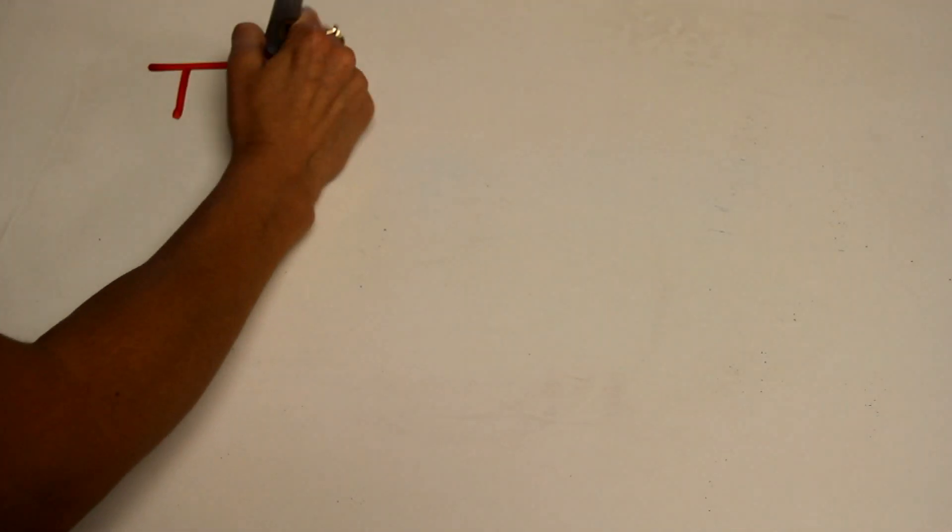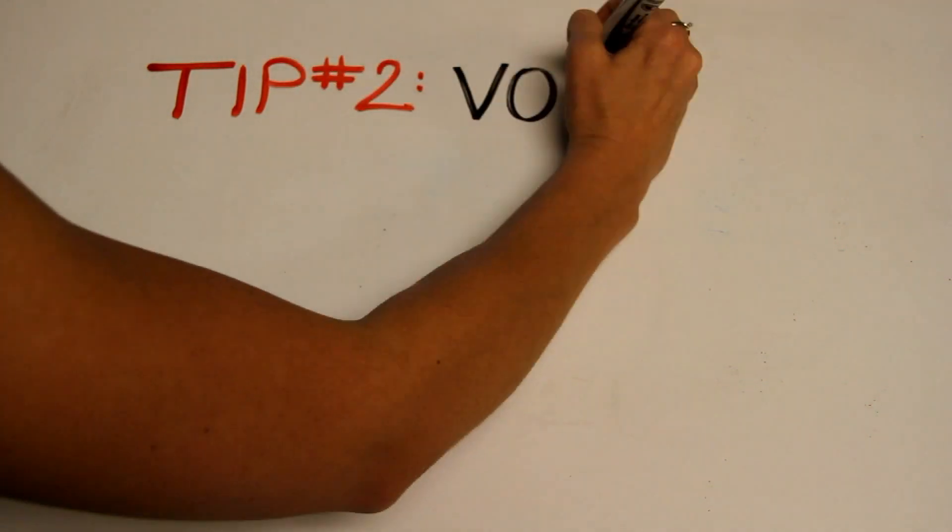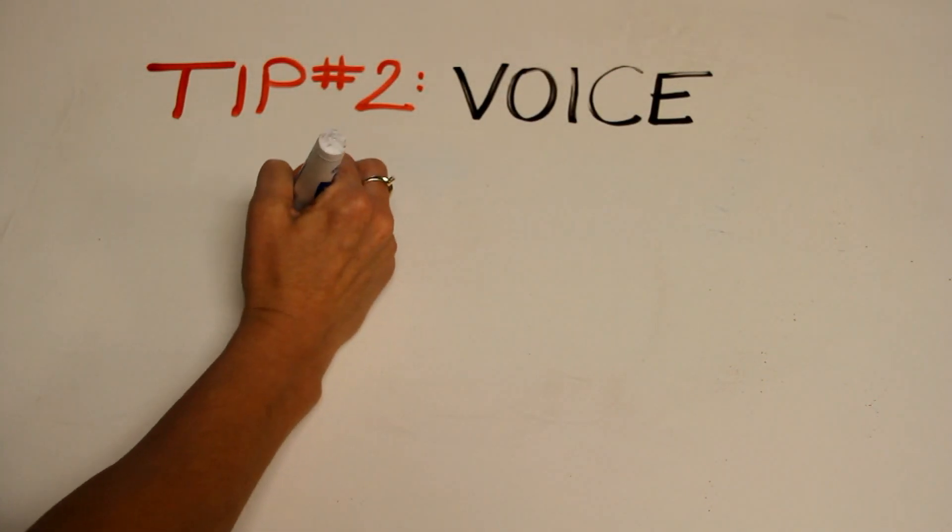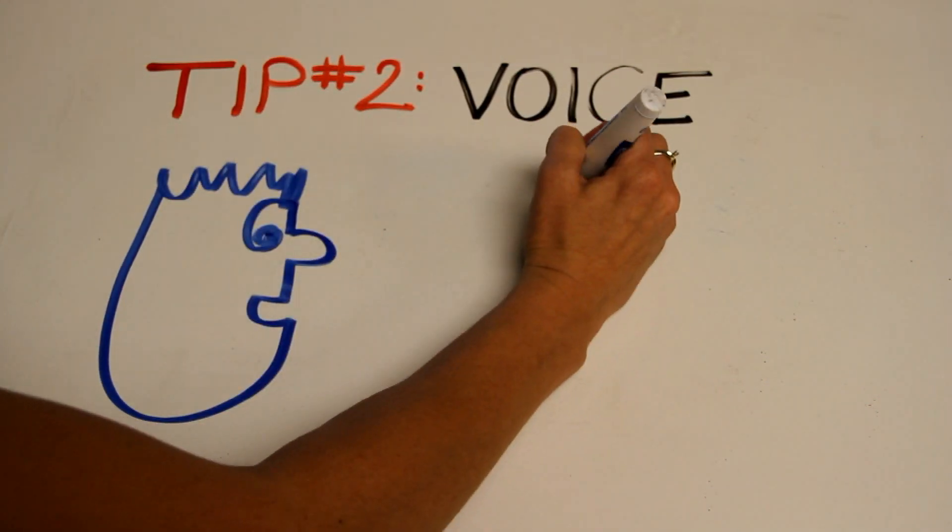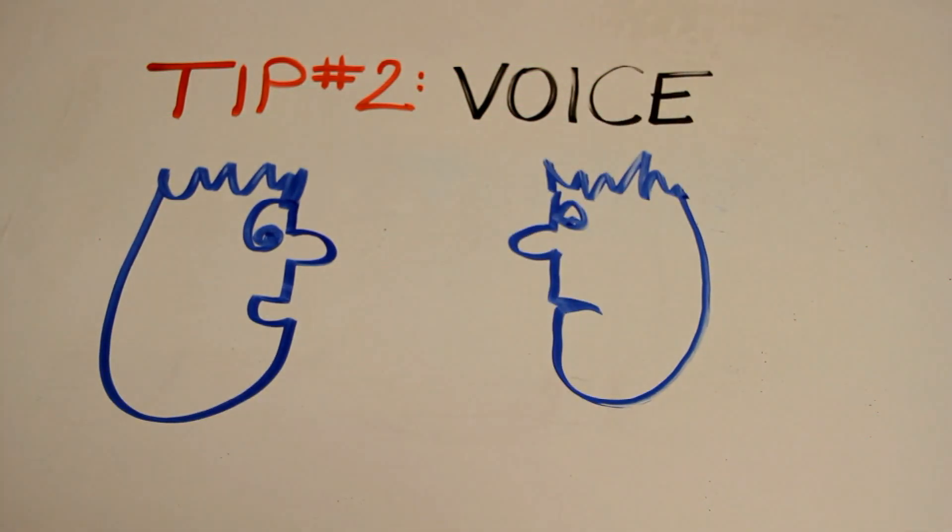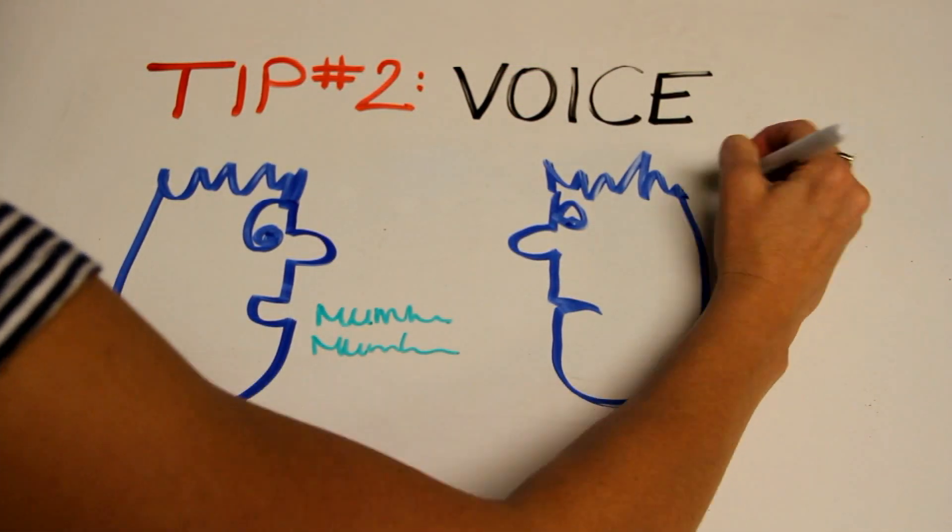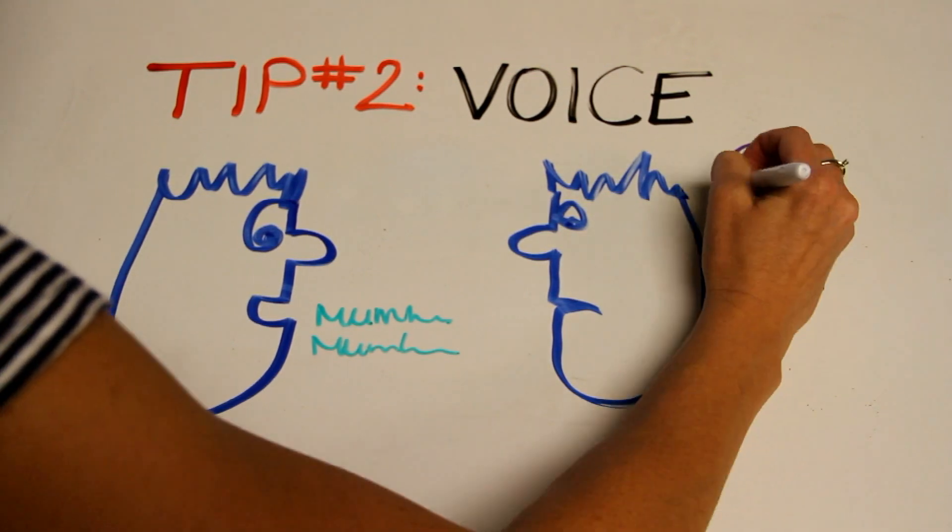Tip number two: voice. One of the most basic elements of good communication is how you sound. If you mumble or speak too quickly, you may lose your message and your listener will struggle to understand you.